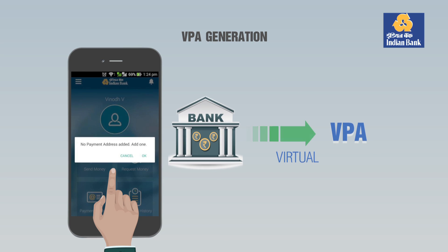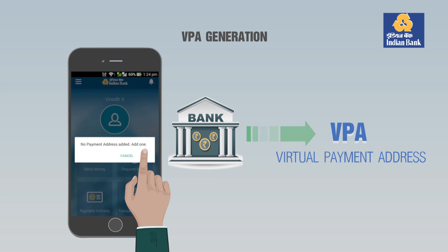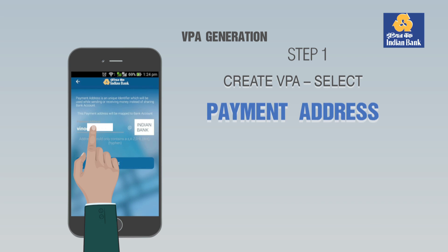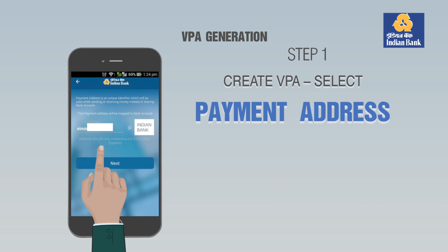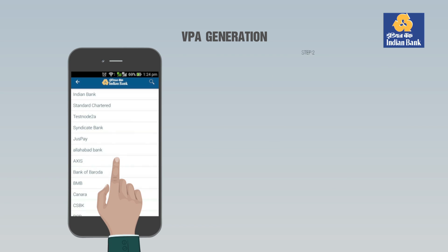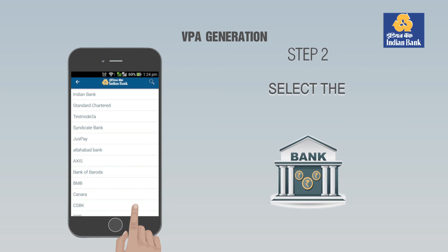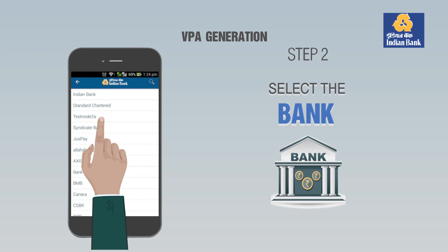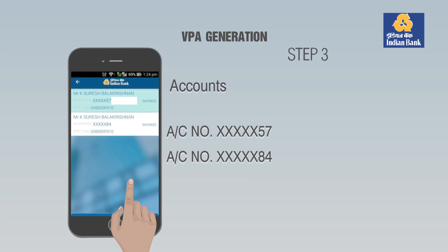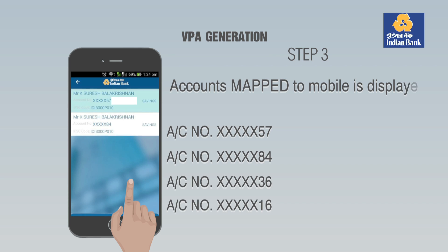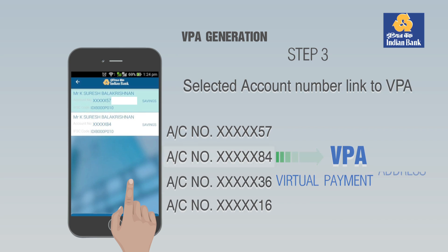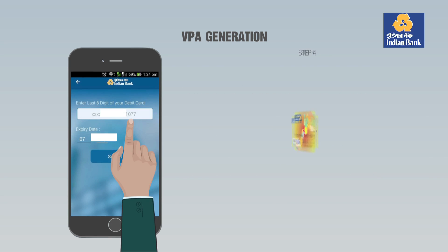VPA Generation: Step 1: Create a VPA by selecting the option 'Payment Address', enter a payment address and select Next. Step 2: Select the name of the bank for linking the account. Step 3: The list of accounts mapped to the mobile number is displayed — select the account number for linking to the respective VPA.